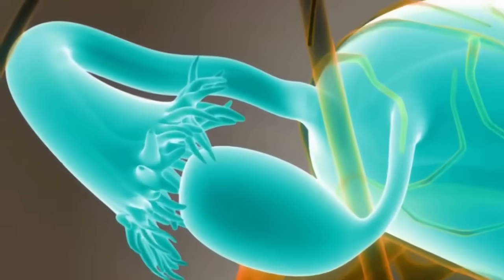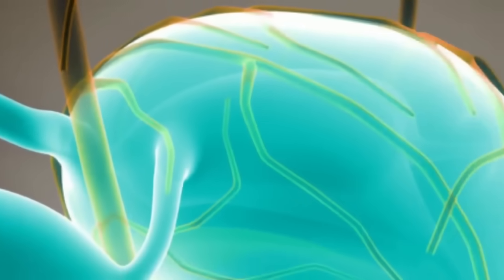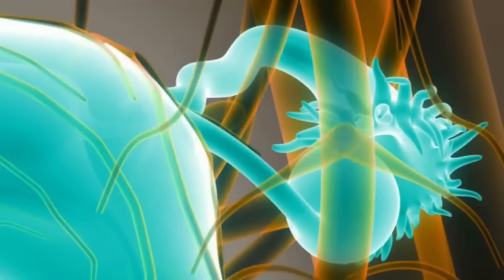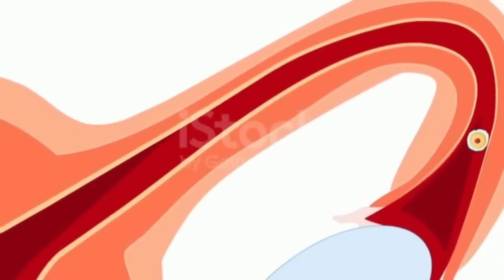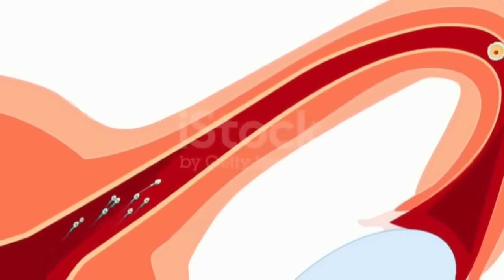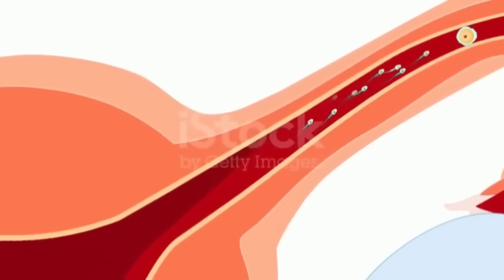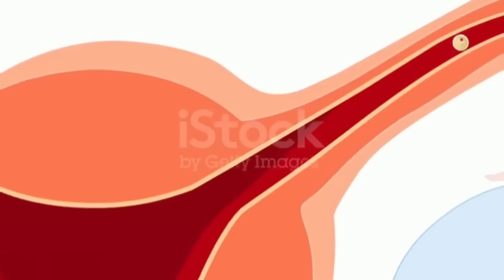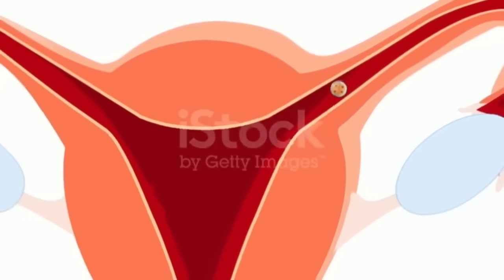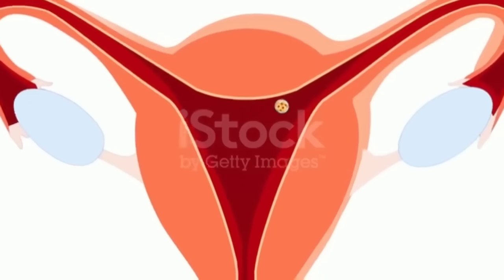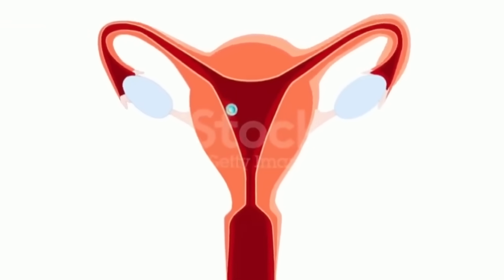Oviducts. The fallopian tubes or oviducts are two very fine tubes leading from the ovaries into the uterus. On maturity of an ovum, the follicle in the ovary ruptures, allowing the ovum to escape and enter the fallopian tube. There it travels toward the uterus, pushed along by movement of cilia on the inner lining of the tubes. This trip takes hours or days. If the ovum is fertilized while in the fallopian tube, it is normally implanted in the endometrium.